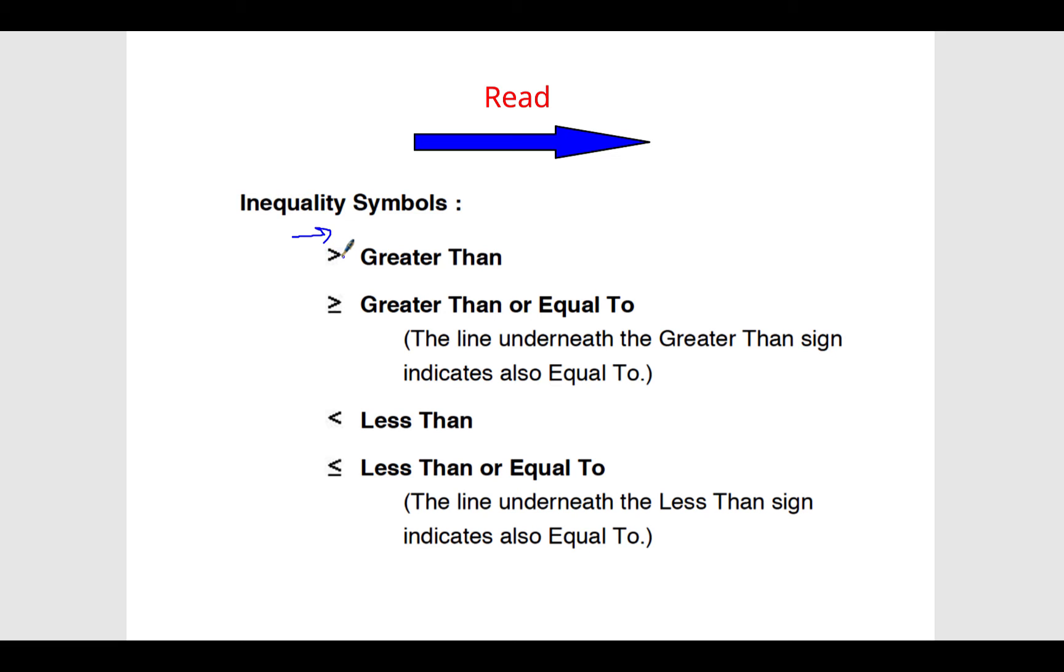This is the pointy end, and it's less than. So if we are reading left to right and we come to the pointy end first, it's less than. If we come to the greater end, it's going to be wider at the beginning. If it has a line underneath it, that means equal to.